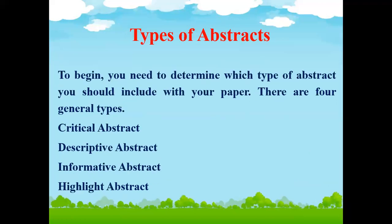Coming towards types of abstracts — you need to determine which type of abstract you should include with your paper. There are four general types: critical abstract, descriptive abstract, informative abstract, and highlights abstract. There are also two structural categories: structured and unstructured.